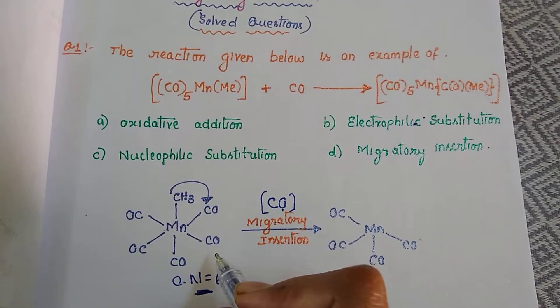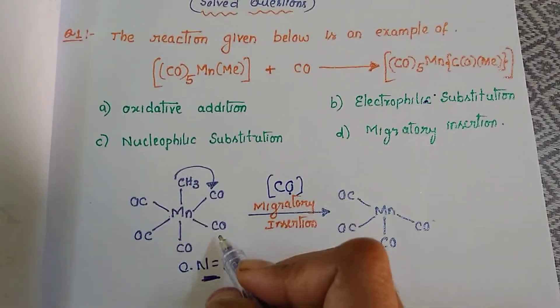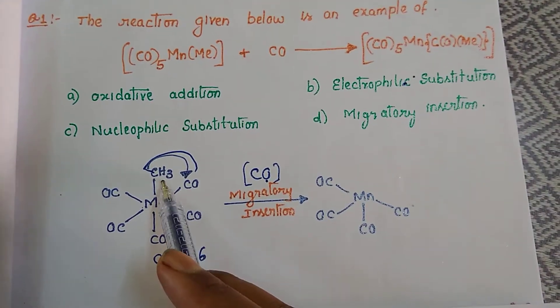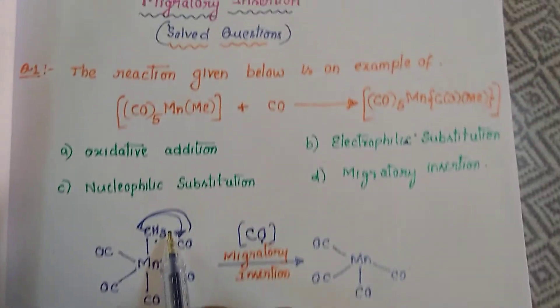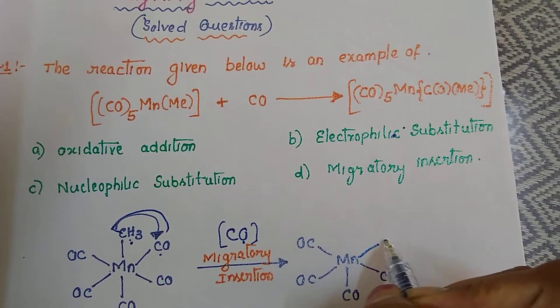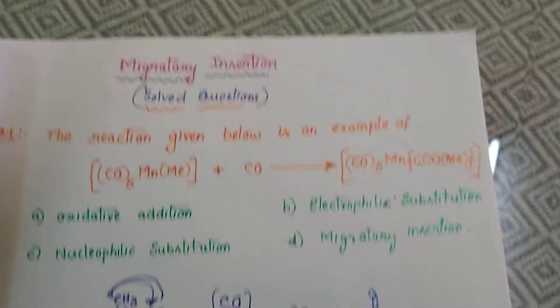For that it has to undergo some migration. So that migration is occurring - the methyl is transferring from here to here. You could notice this methyl is going to transfer from here to CO.